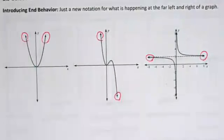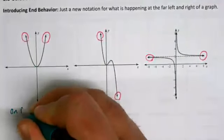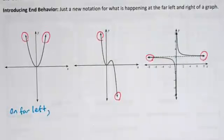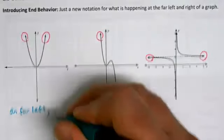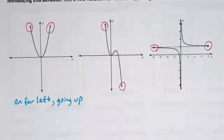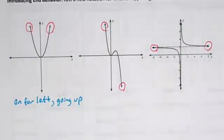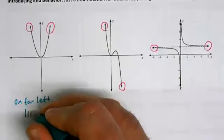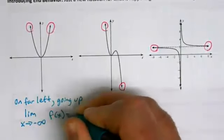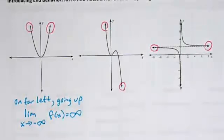On the far left of the graph, is it going up, going down, or heading toward a particular value? Looking at this graph, it appears to be going up. We use limit notation for pre-calculus, and you'll use something similar in calculus. This is how I would write it in limit notation.